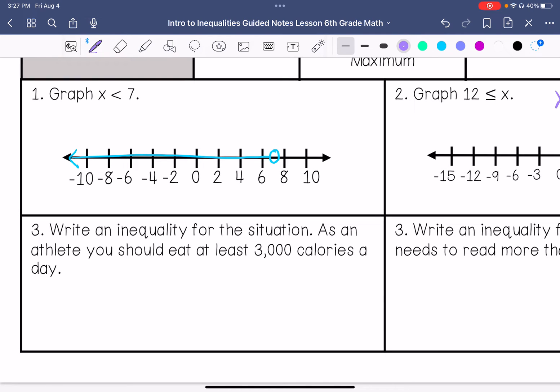Number 3, write an inequality for the situation. As an athlete, you should eat at least 3,000 calories a day, so that means that you need to eat equal to 3,000 or more. So it would be x is greater than or equal to 3,000 calories a day.